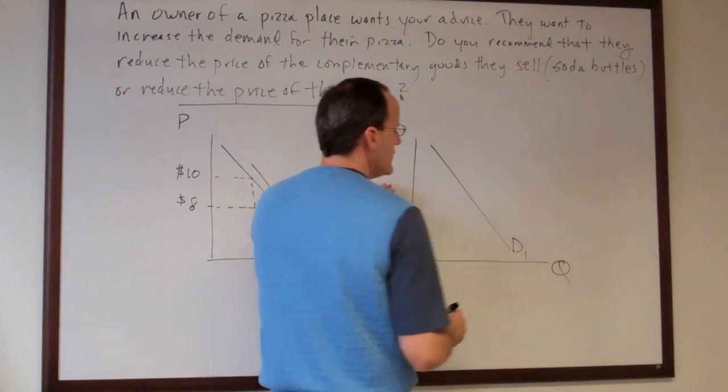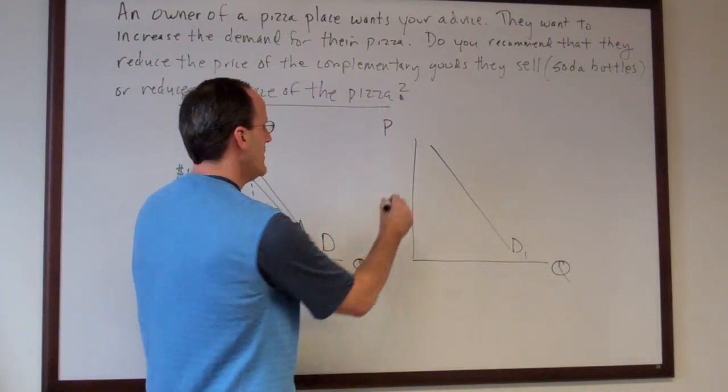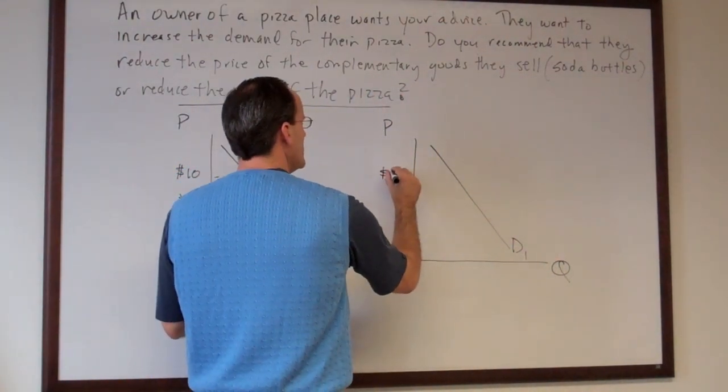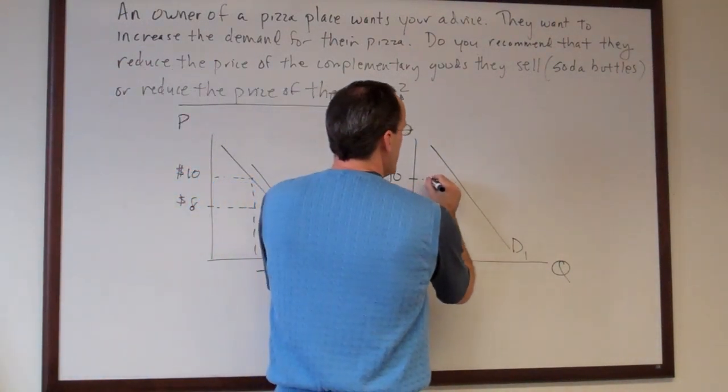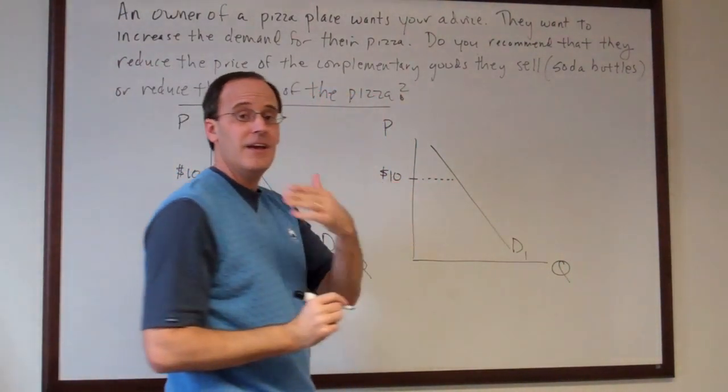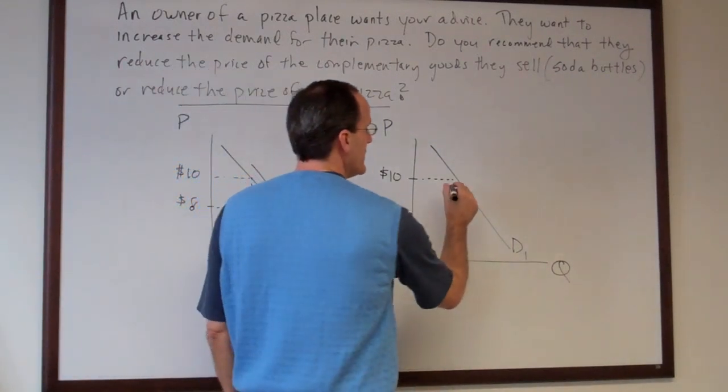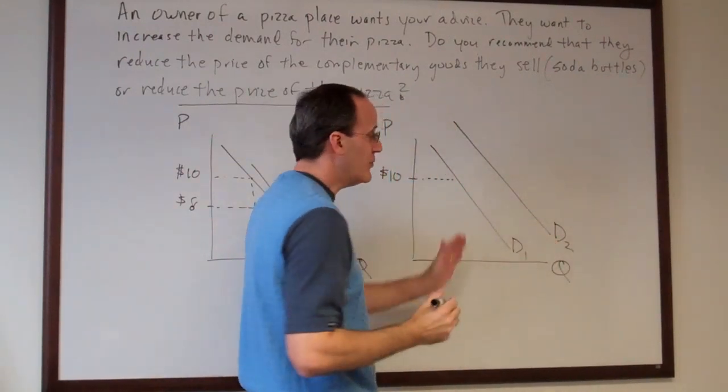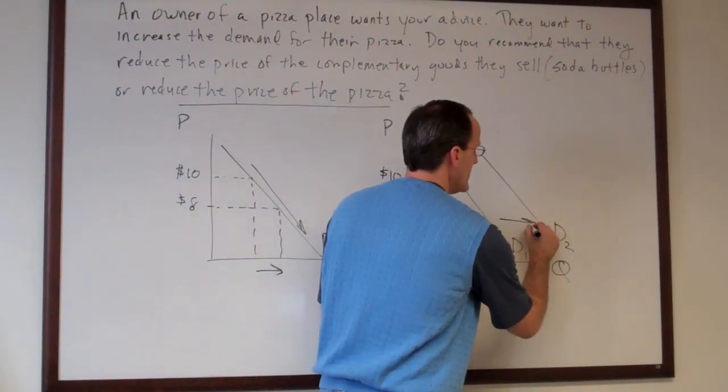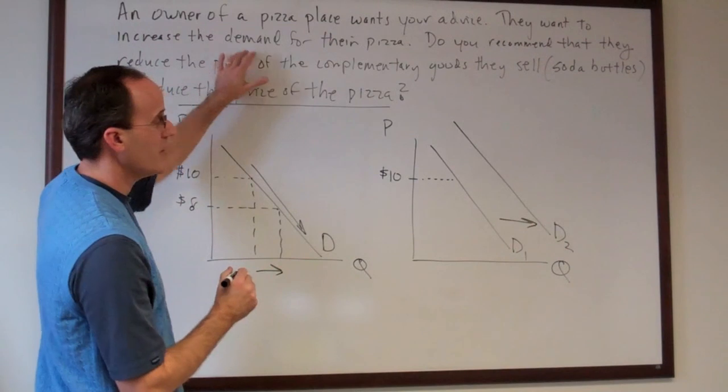So there's some initial demand for pizza. The business keeps the pizza price at ten dollars. But because the soda bottles and pizza go together, if the soda bottles are cheaper, the demand for pizza would increase. This is the increase in demand that the question asks for.